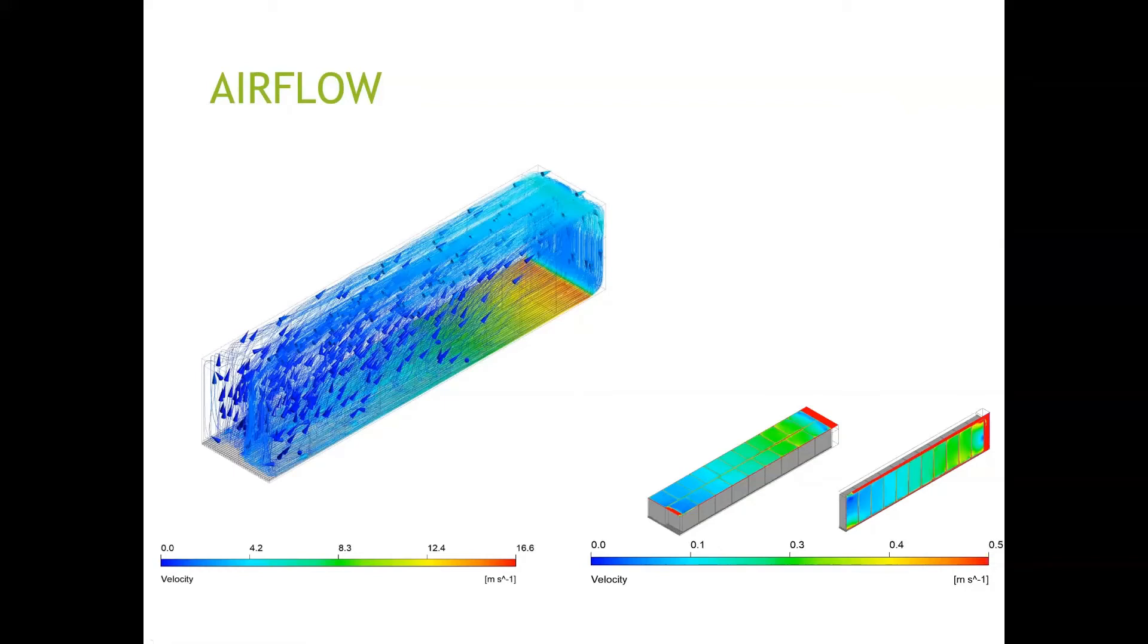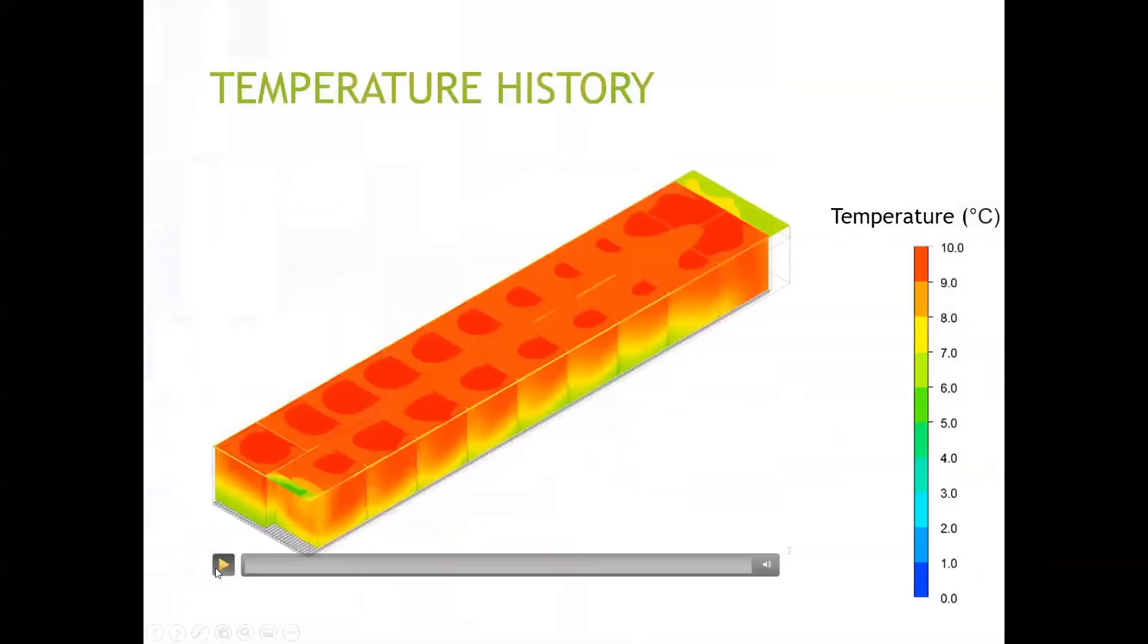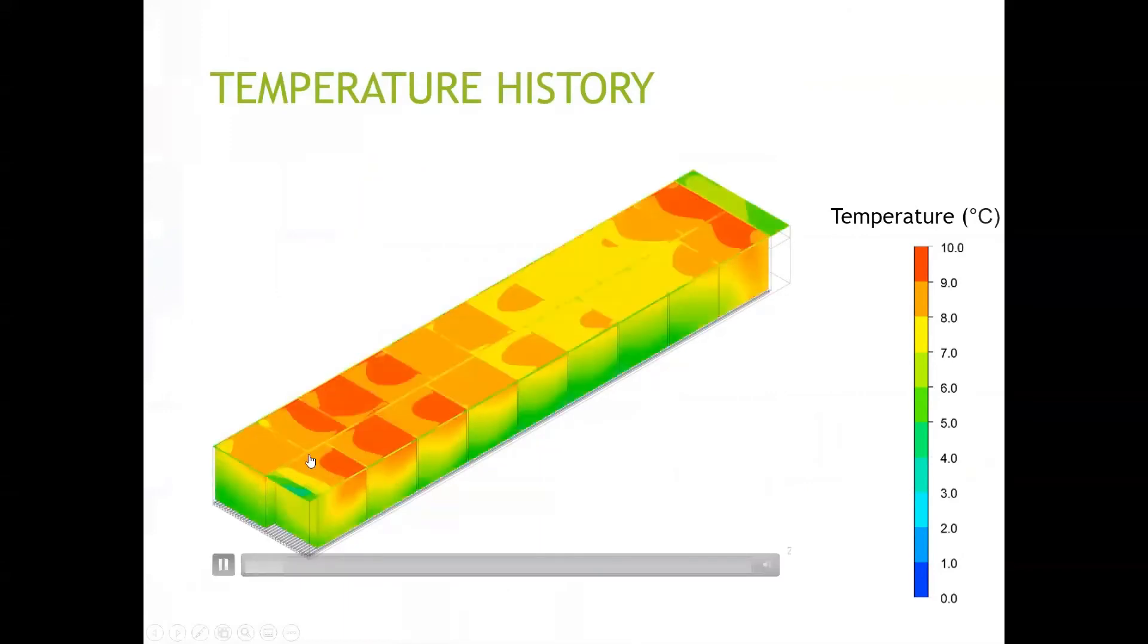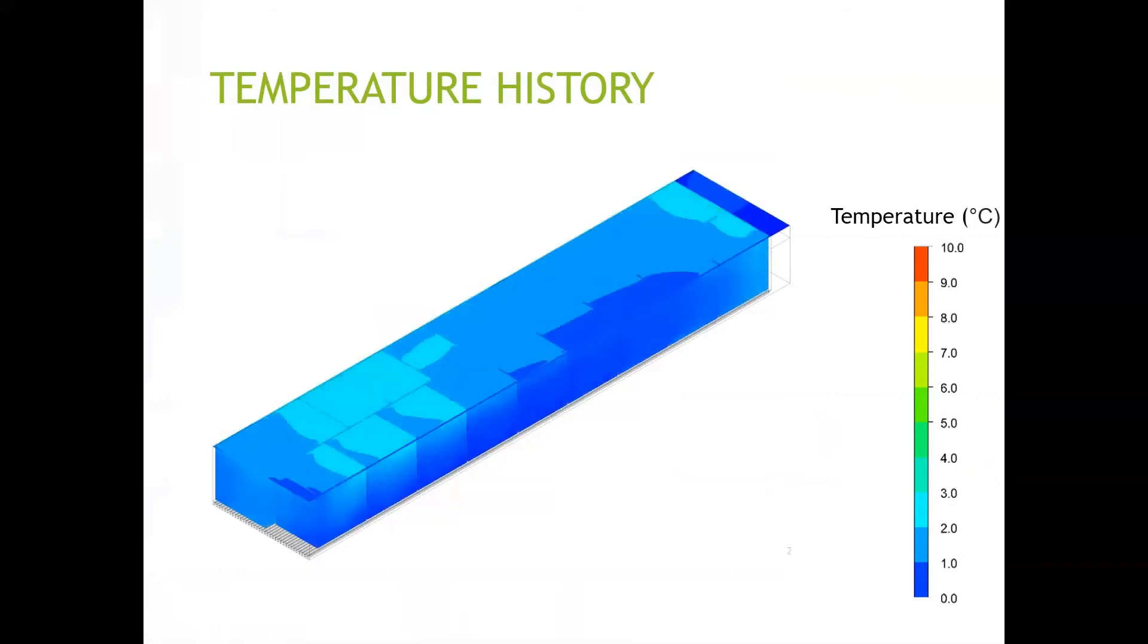This, as you will see, has a clear impact on the temperature or cooling distribution. Also animated here is the cooling inside the container. Observe here in the region near the door and also near the cooling unit at the back, the cooling is much lower than the rest of the pallet. This is a direct reflection of the airflow distribution in the container.